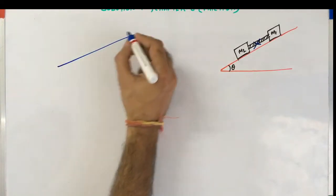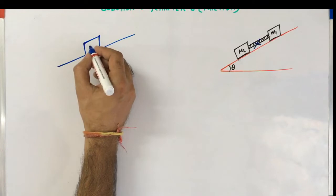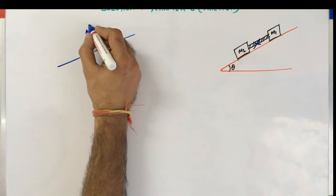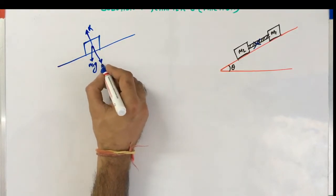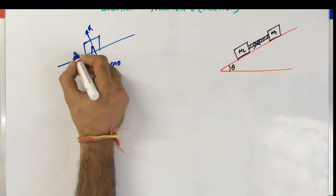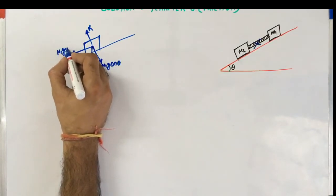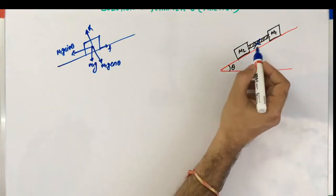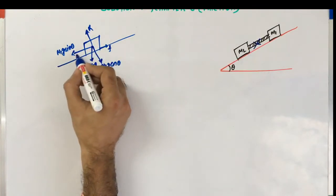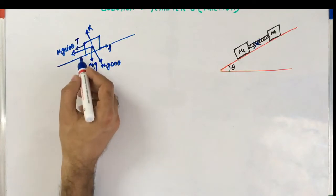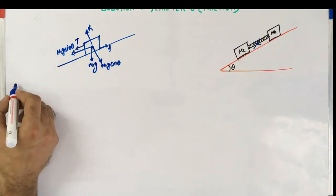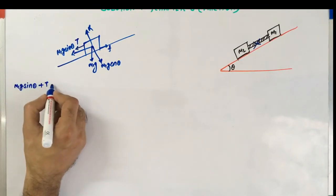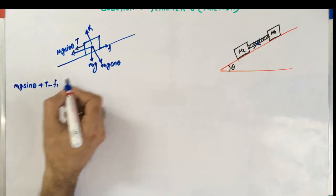I am drawing the FBD of M1. The M1G force will act downward. The components of M1G are M1G cos(theta) as the reaction force component and M1G sin(theta) along the incline. The frictional force acts in the upward direction, and the tension T provided by the rod will try to pull M1 in the upward direction along the incline.